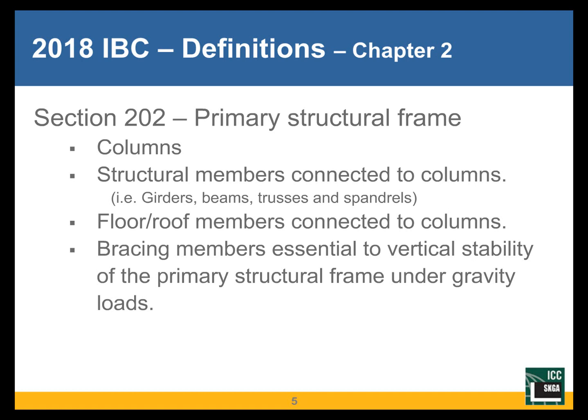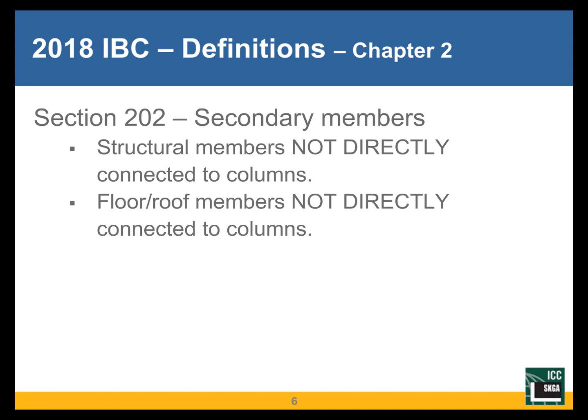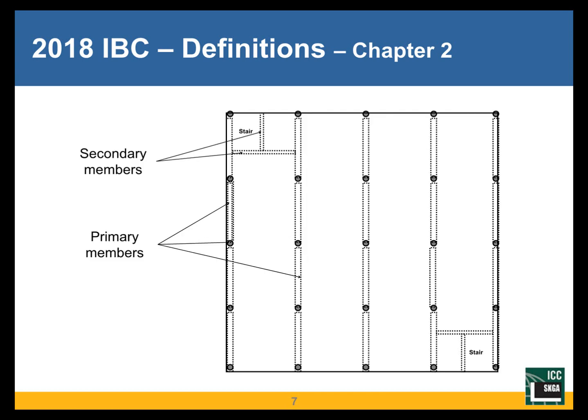Secondary members are any members not directly connected to the columns, floor and roof members not directly connected to the columns, and any bracing members not part of the primary structural frame. In this fairly simple schematic, columns and beams running between columns are the kinds of elements that would be considered part of the primary structural frame.